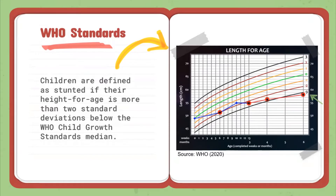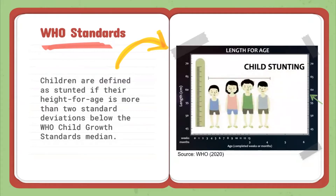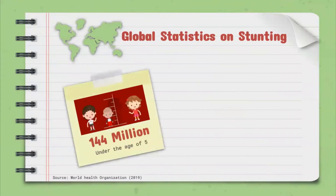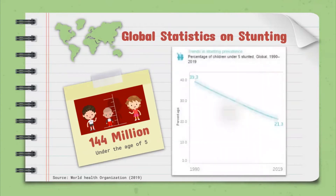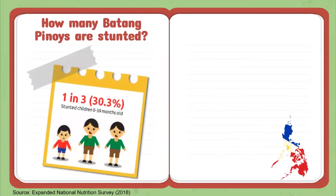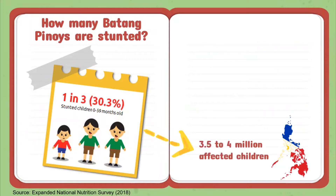This means that the children are below average in the normal growth range of children in their same age bracket. In 2019, globally, 144 million children under the age of five were classified as stunted, with a prevalence rate of 21.3 percent. In the Philippines, one out of three Filipino children below the age of five are stunted, which accounts to 3.5 to 4 million affected children nationwide. This is classified as high in magnitude and severity according to WHO standards.